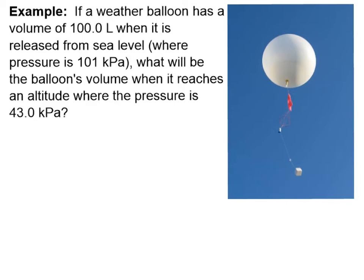Let's try a sample problem together. Let's say we have a weather balloon with a volume of 100.0 liters when it's released from sea level. At sea level, our pressure is going to be 101 kilopascal. So what will the balloon's volume be when it reaches an altitude where the pressure is 43.0 kilopascal? I'm going to write down my unknown. My final balloon's final volume, Vf, is my unknown. My initial pressure is 101 kilopascal. That's when I'm at sea level when I'm releasing the balloon. And my initial volume is 100 liters when I'm releasing the balloon.